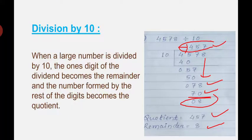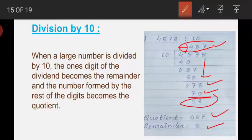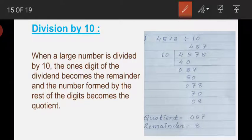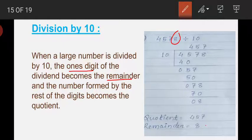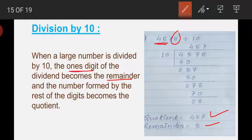When a large number is divided by 10, the digit in the ones place — here that digit is 8 — becomes the remainder. The number formed by the rest of the digits becomes the quotient. So 8 is the remainder and the rest of the digits, 457, form the quotient. While dividing any number by 10, the digit in the ones place is the remainder, and the number formed by the rest of the digits is the quotient.